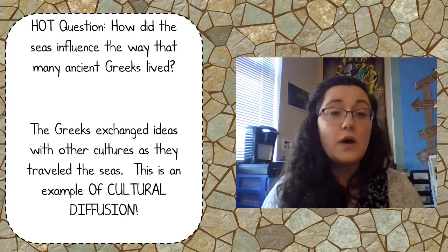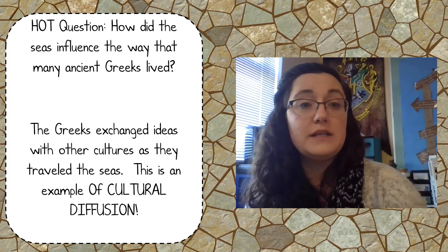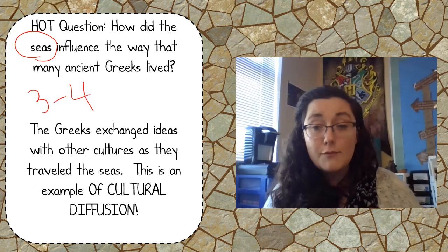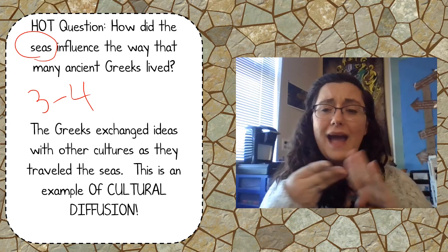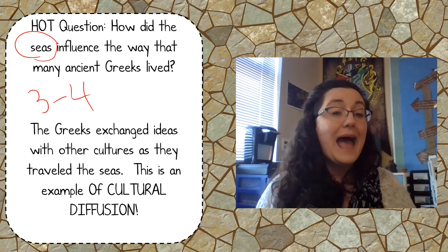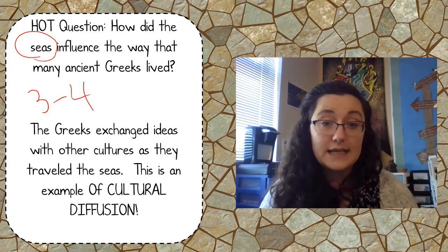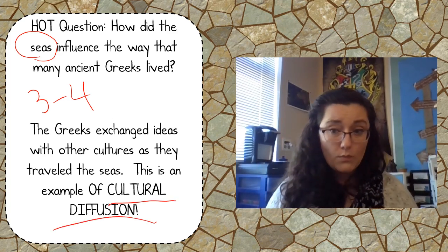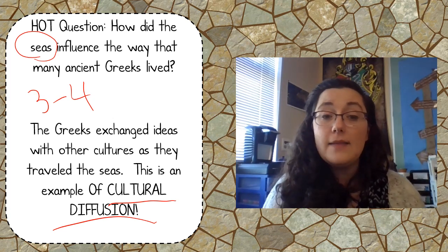Think about this hot question: How did the seas and oceans influence the way that many Greeks lived? Write three to four sentences and think about the food they got, what they were good at building, and how they communicated — or the lack of communication — with other cultures. As the Greeks traveled and exchanged ideas with other places like Egypt or Mesopotamia, they exchanged ideas. We know this phrase: it's called cultural diffusion.